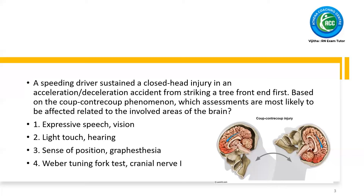The assessment options include: expressive speech, vision changes, light touch, hearing, sense of position, and graphesthesia — we have a tuning fork. Also, cranial nerve damage — which is affected?